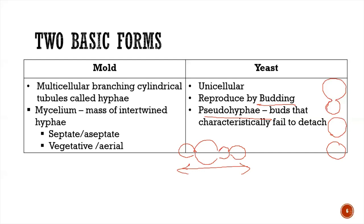When a mother cell fails to repeatedly detach, it produces an elongated structure called a pseudohyphae. It is important to distinguish pseudohyphae from true hyphae, since pseudohyphae might be mistaken as germ tubes — the germ tube test being used to identify Candida albicans. Pseudohyphae will have constrictions, which should not be present in true hyphae.